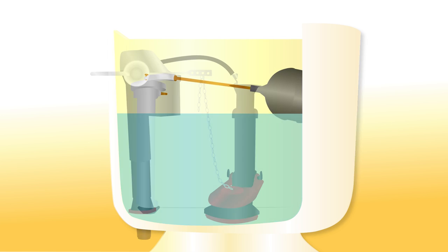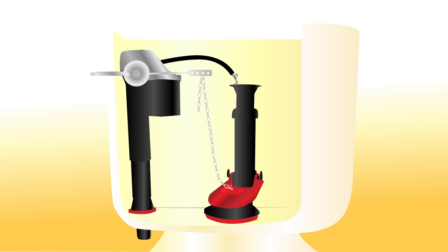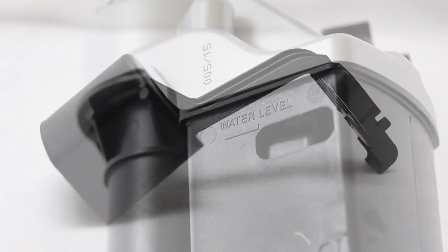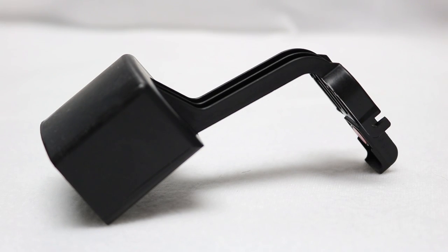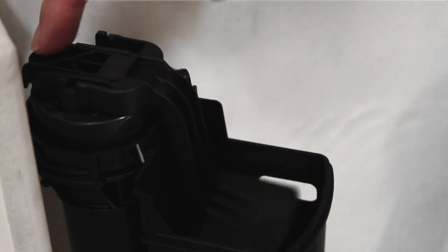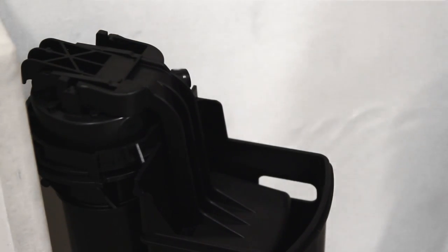As time went on, the fill valve design evolved. Newer valves like the Corky Quiet Fill fill valve have an internal float which condenses the overall design of the fill valve and has a more precise shut off than traditional ball clocks.